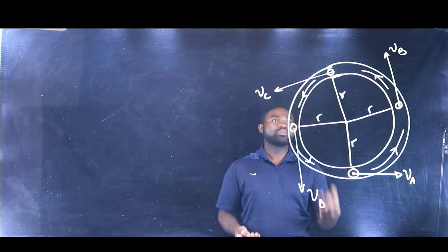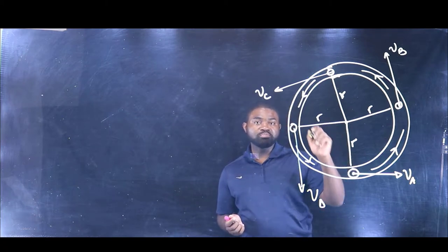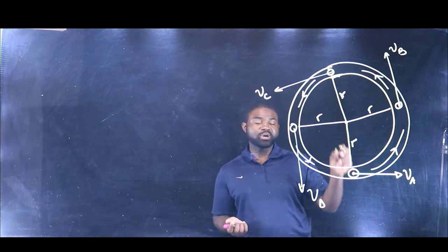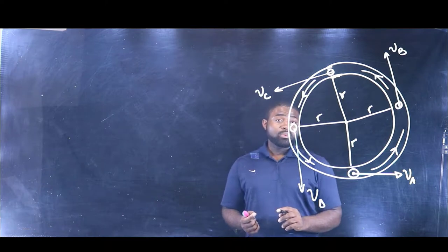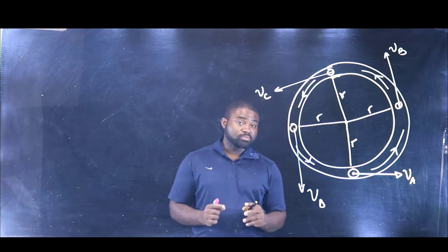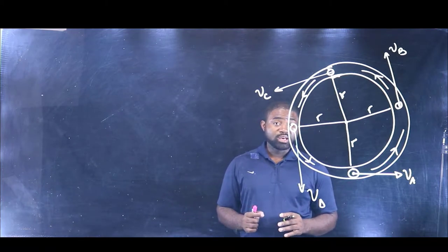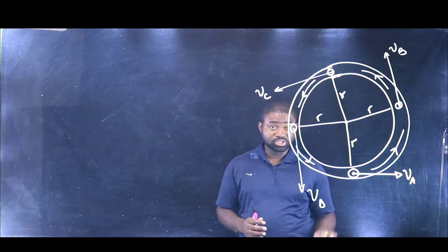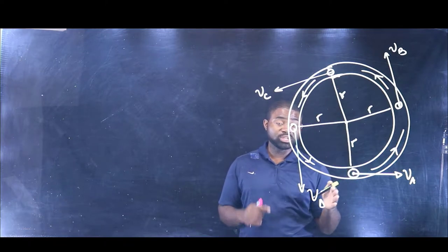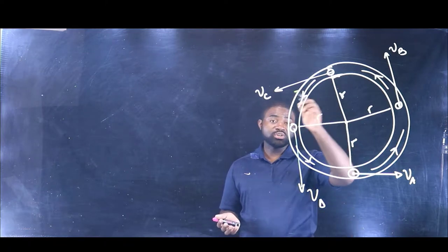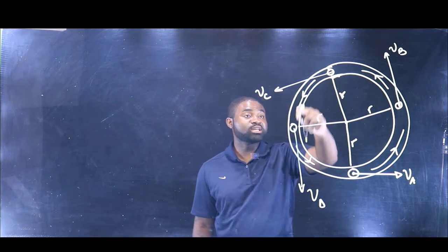If I throw a pen up and down, both the speed and the direction change along the path, so the object accelerates. So, the velocity of an object can change if its magnitude changes and direction remains the same, if its magnitude remains the same and direction changes as in circular motion, or if both magnitude and direction change such as a projectile in a curved path. So, as long as the direction is changing, this object is accelerating.